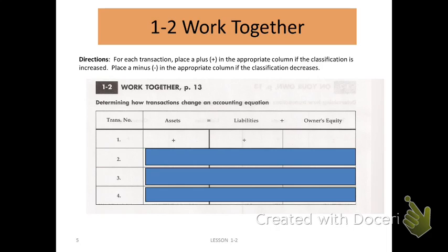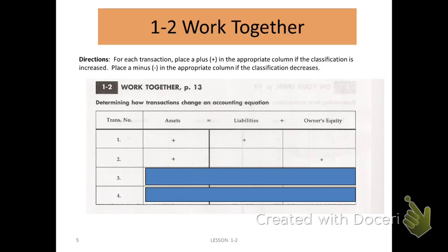Transaction two says that we received cash from the owner as an investment. We have to think about which two account titles are within this transaction. There is cash, which is an asset, and the word owner, which sounds like owner's equity. Received cash means my cash is going up. The owner is placing more stake into the company, so owner's equity should increase. Our cash, which is an asset, increased, and the amount of owner's equity also increased. Assets is on the left, owner's equity is on the right — both increased, so our accounting equation is in balance.